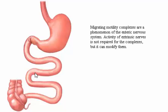Migrating motility complexes are a phenomenon of the enteric nervous system. Activity of extrinsic nerves is not required for the complexes, but it can modify them.